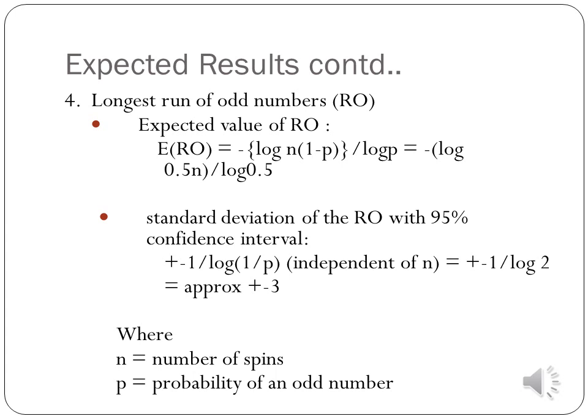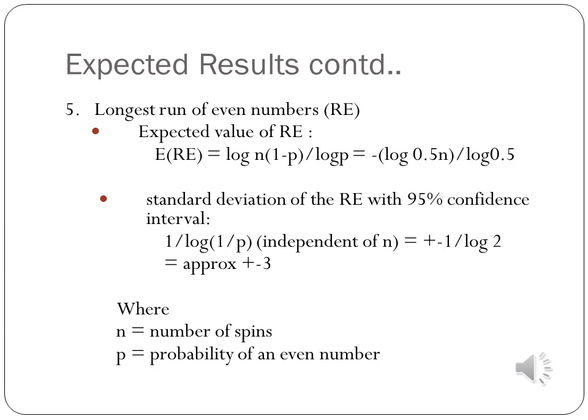The standard deviation is 1/log(0.5), giving a 95% confidence interval of plus or minus 3. This means 95% of actual results could deviate from the expected result by ±3. Since the probability of an even number equals the probability of an odd number — both 1/2 — the expected value for the longest run of even numbers is the same as for odd numbers.